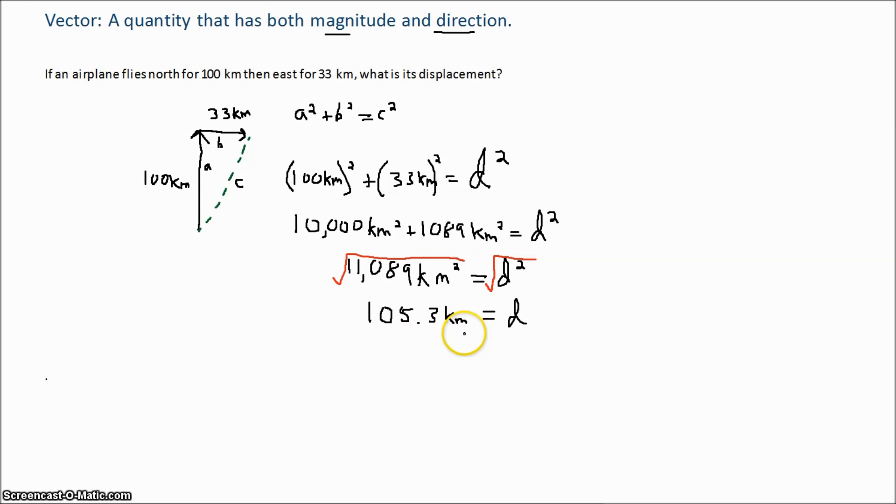Now, this is just the magnitude. The direction is also important. So we can say that the displacement, to make our final answer, is 105.3 kilometers to the northeast. Put our box around the answer, and we're done.